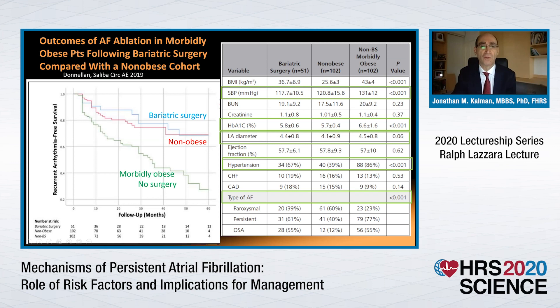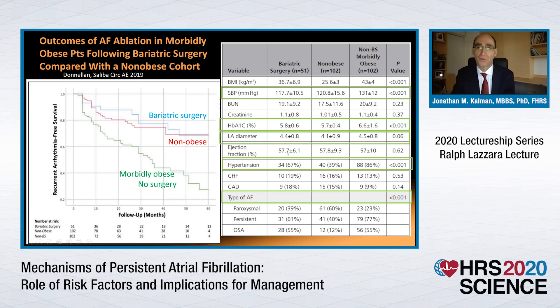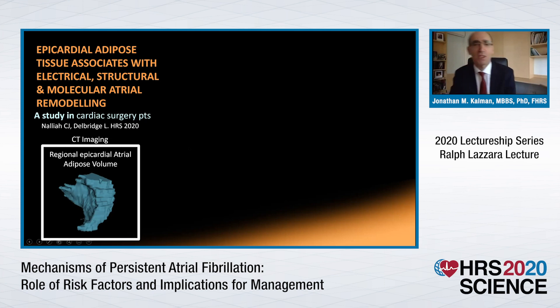A recent study from the Cleveland Clinic compared morbidly obese patients who underwent bariatric surgery with those who did not, and with a non-obese group. Outcomes in those who underwent bariatric surgery were as good as those who were not obese, whereas morbidly obese patients without surgery had really poor outcomes. Bariatric surgery was associated with falls in systolic blood pressure, reduction in hypertension, improved glycaemic control, reduction in left atrial dimensions, and reversal from persistent back to paroxysmal atrial fibrillation — evidence of reverse structural remodelling underpinning improved outcomes.